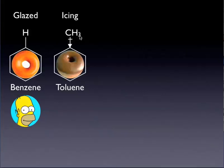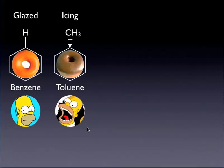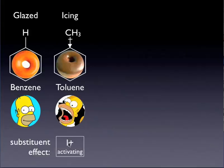Alkyl groups — methyl, ethyl, propyl, or any other alkyl group — have the effect of inductively pushing electron density into the ring via the sigma bond. Homer will be much more likely to partake in a donut with icing on top. We refer to this substituent effect as I+: the I indicates this is inductive, and the plus tells us we're pushing electron density into the aromatic system, thereby activating it towards electrophilic attack.